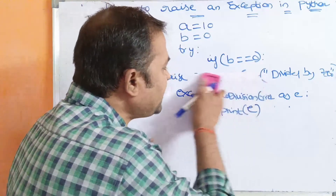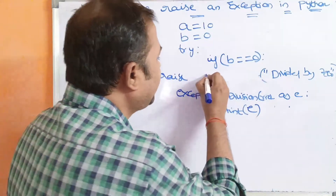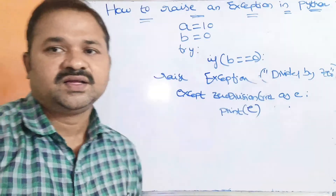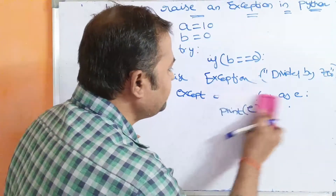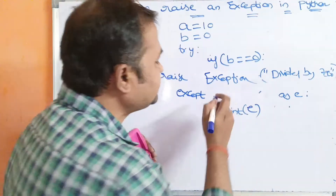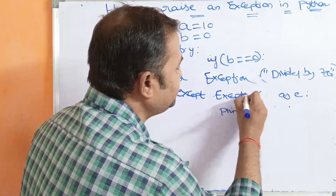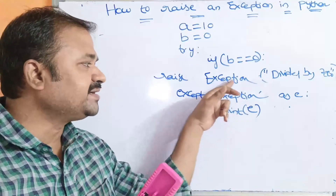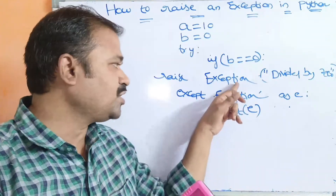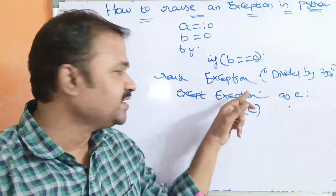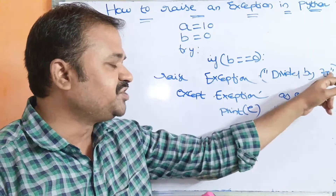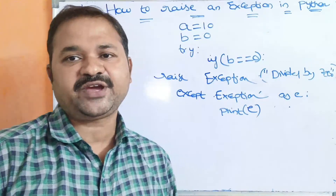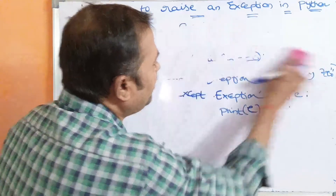If you don't know the specific exception class name, you can simply use Exception, which is the base class from which all built-in exception classes are derived. So: except Exception as e, and raise Exception('divide by 0'). The control goes to the except block with class Exception, and the message 'divide by 0' stored in e will be printed.